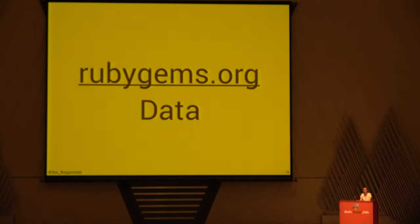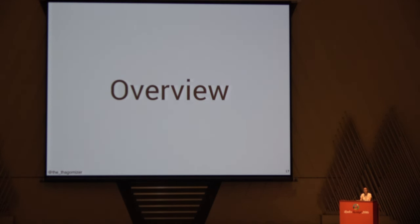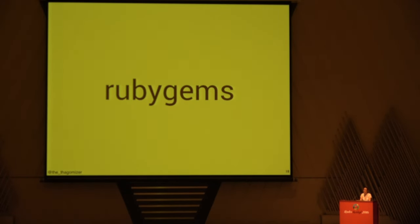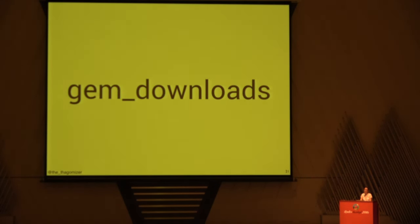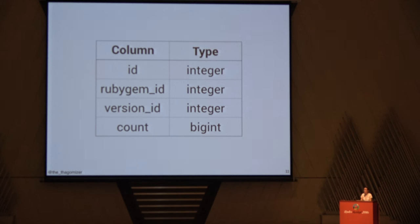I'm going to give you a brief overview of the data. RubyGems supplies two data sets: a Postgres data set and a Redis data set. I'm only using the Postgres data because the Redis data wasn't useful for answering my questions. The primary table in the Postgres data set is Rubygems, and it lists all the gems. I ignored the slug field for my purposes. I need to know how popular a gem is, so I need to know how many times it's been downloaded. The gem downloads table includes that information — it's three foreign keys and a count.